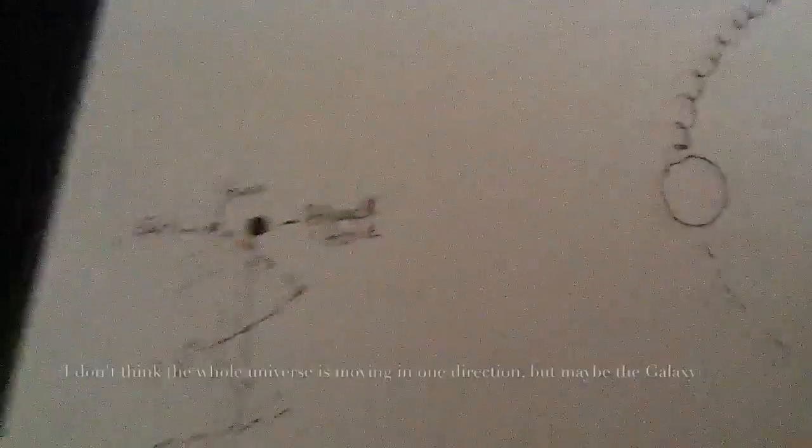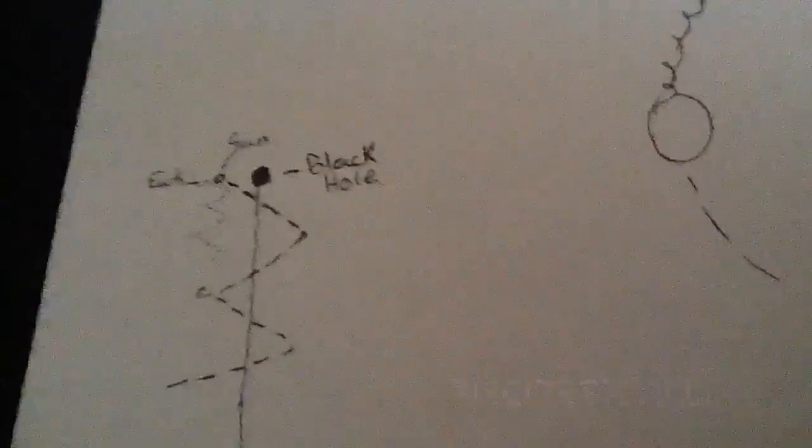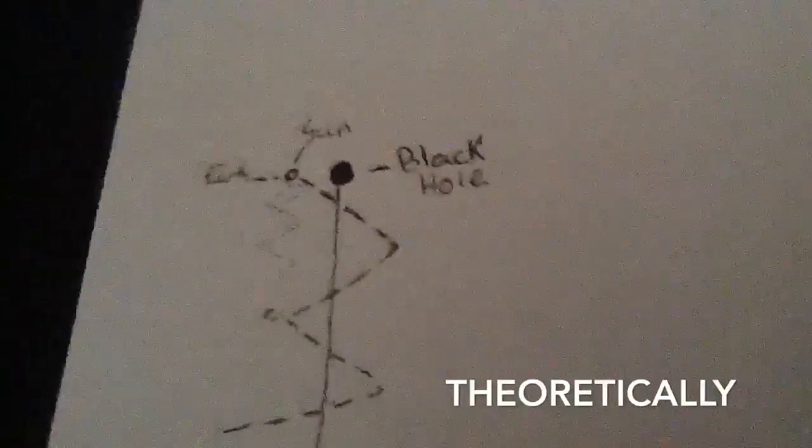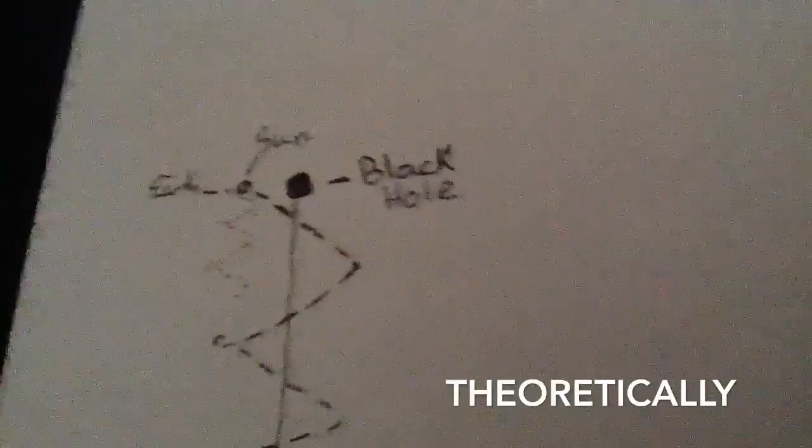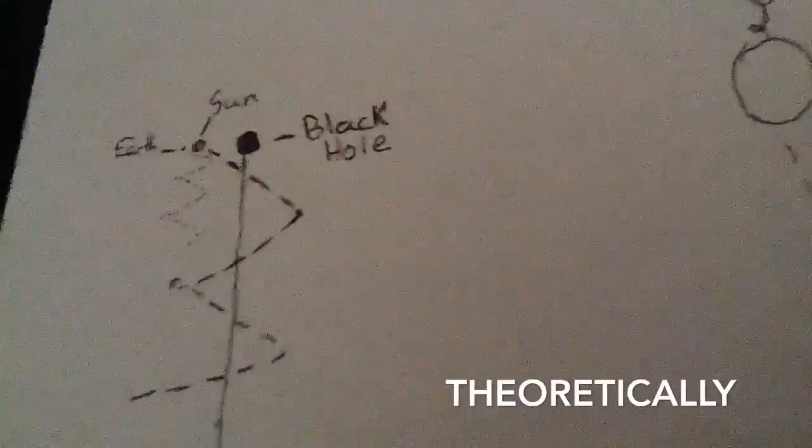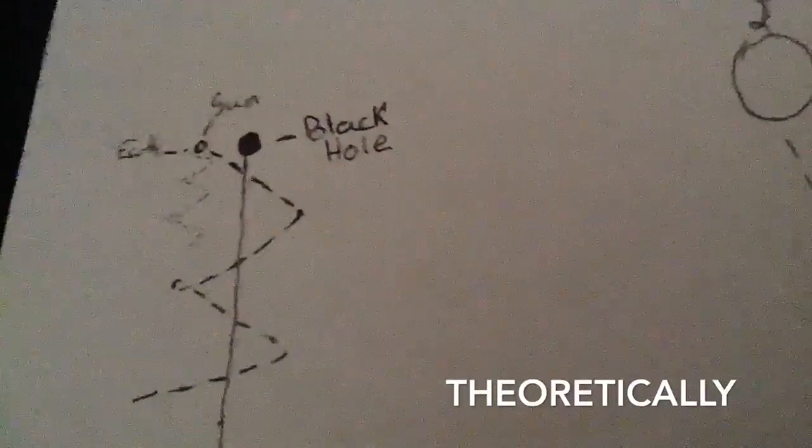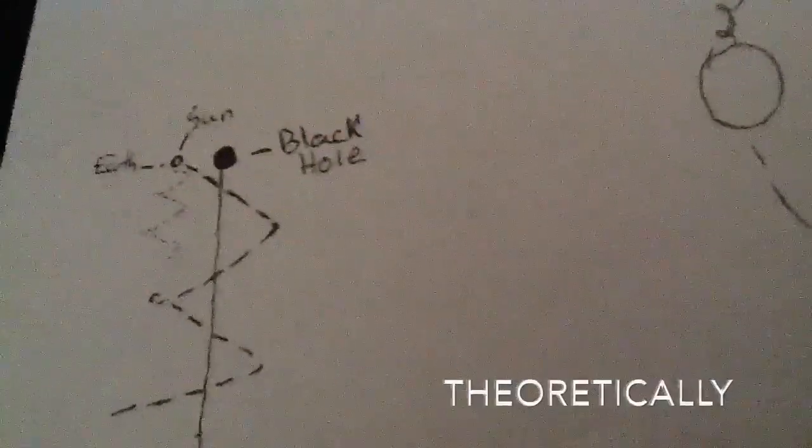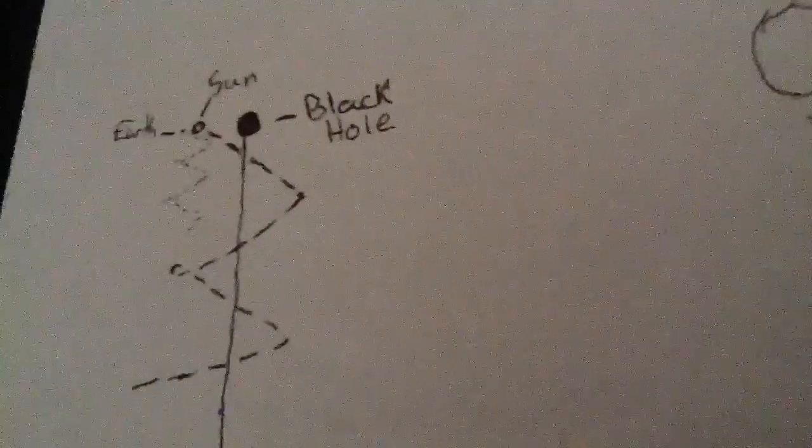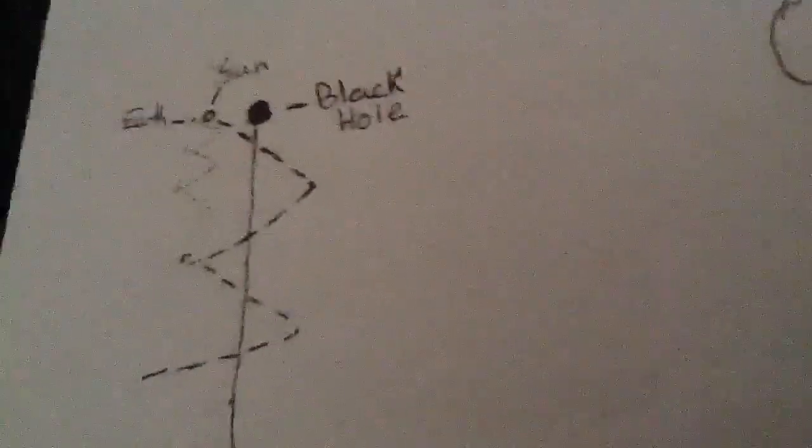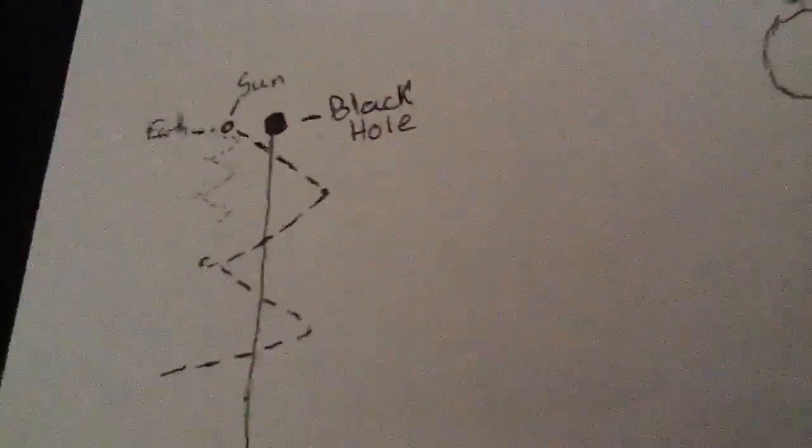The black hole has to be moving because if the sun is pulling the earth in this way, then that's what is causing the planets and everything that we see, the stars, going around the black hole. This movement through space is causing this circular motion.